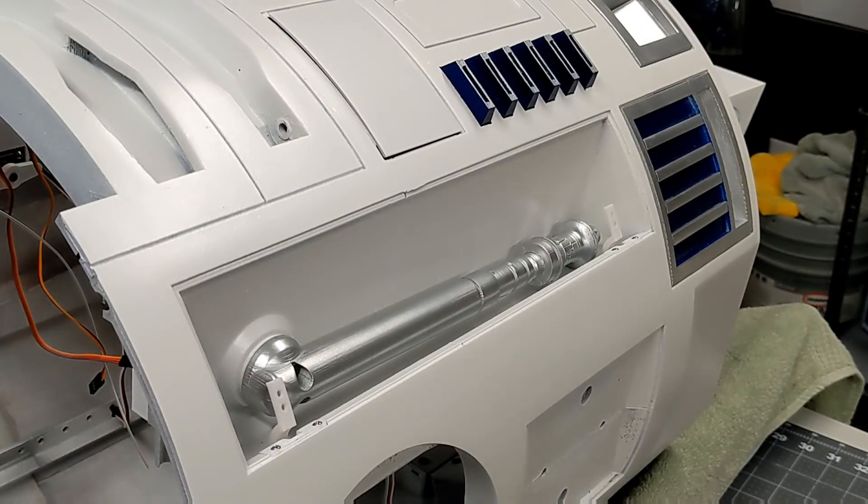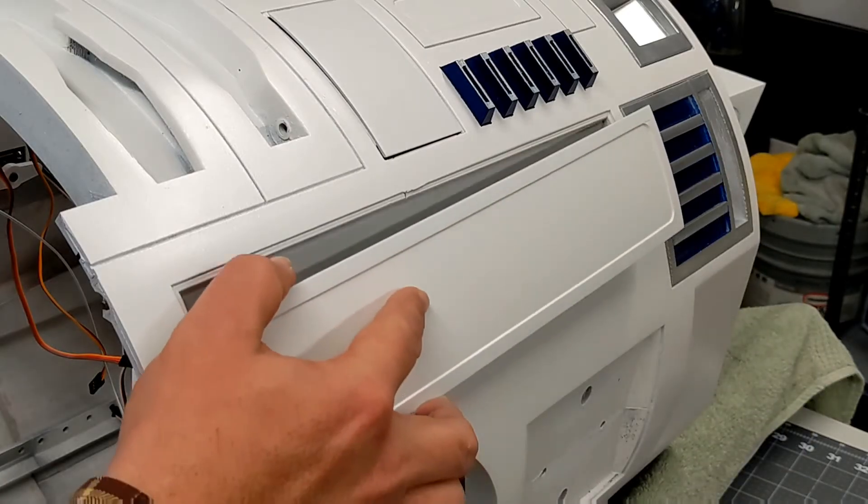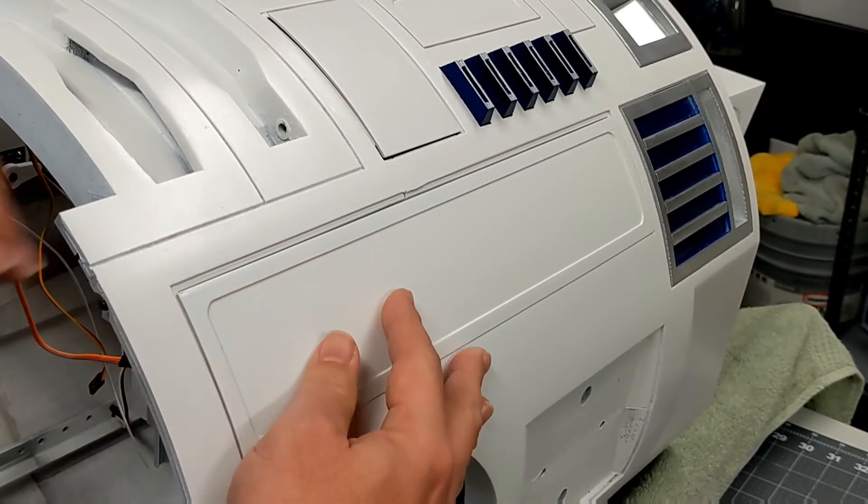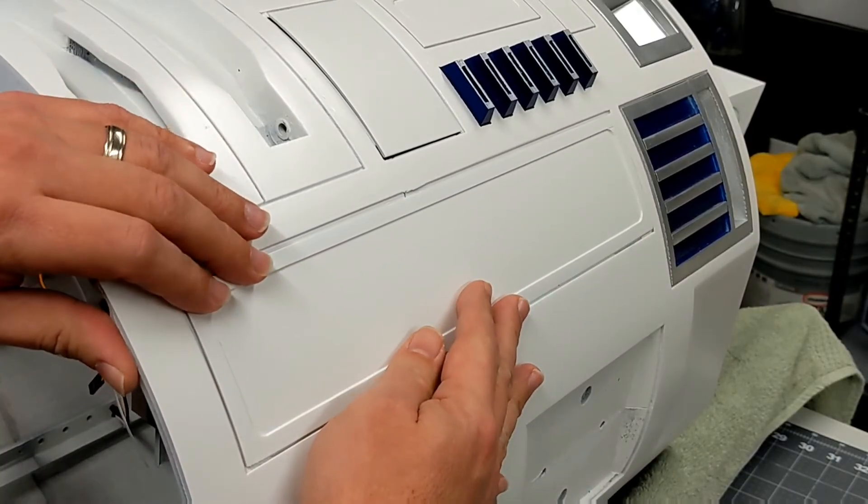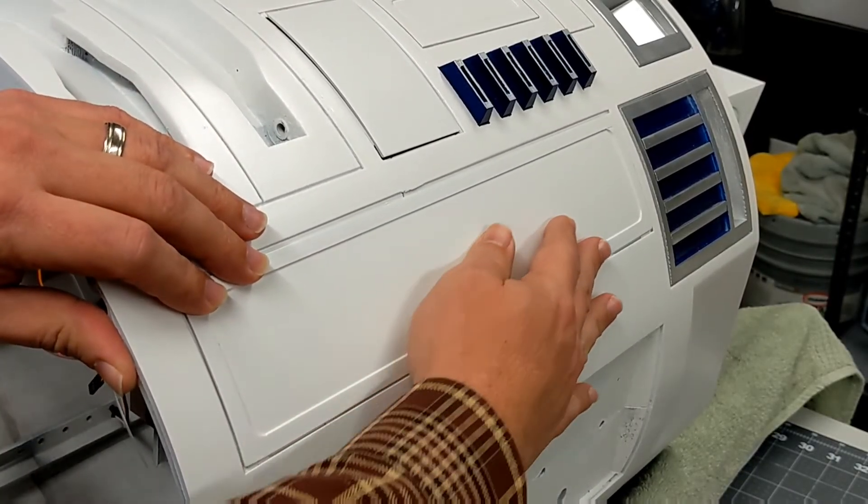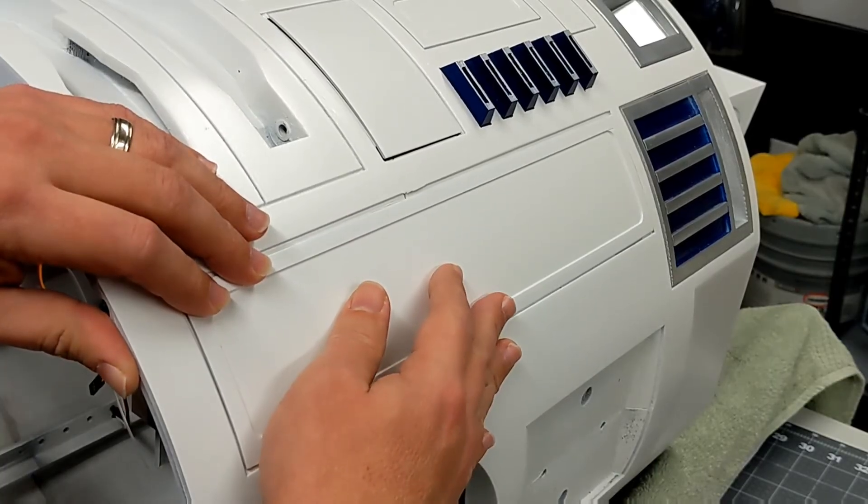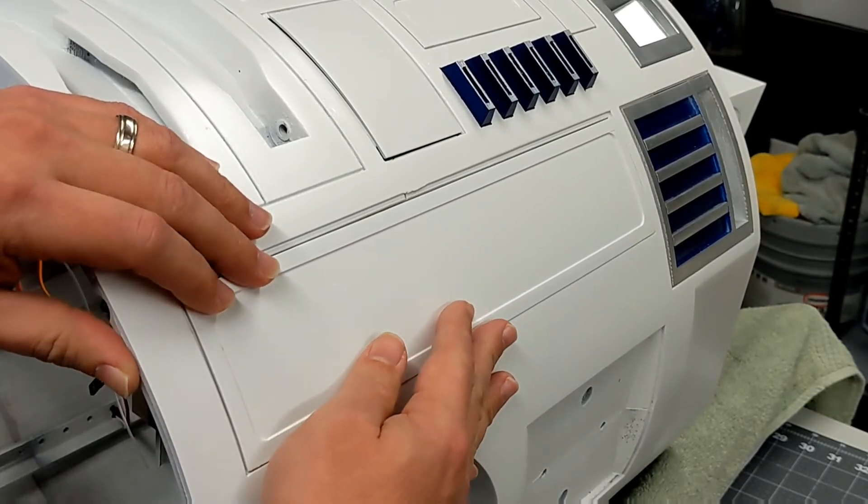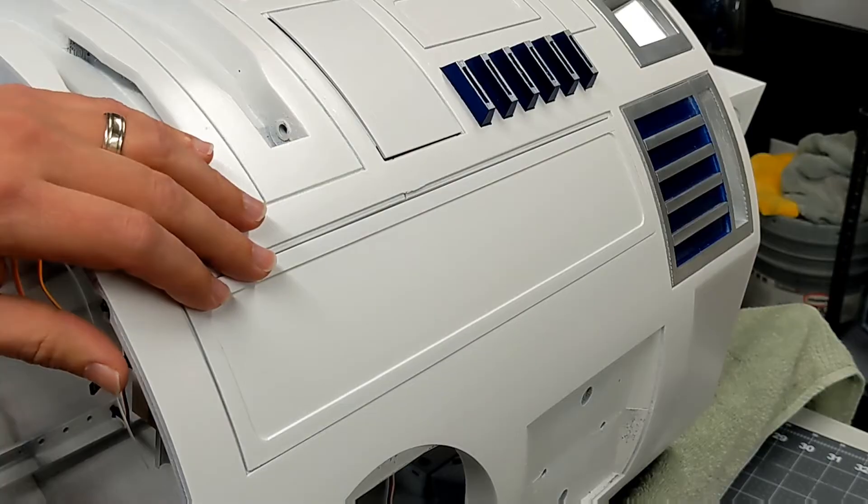So the next thing I wanted to do was to try and figure out if the door, in fact, fit into the opening. So I removed the door from the hinges and just wanted to see if the door would in fact sit nice and flush. And clearly it can. There's no reason why this door shouldn't fit in here. So I decided to take a look and see what was going on with the hinge.